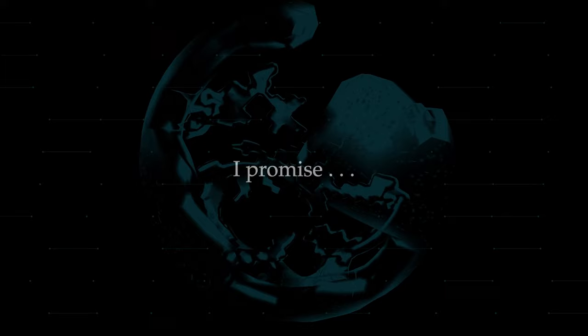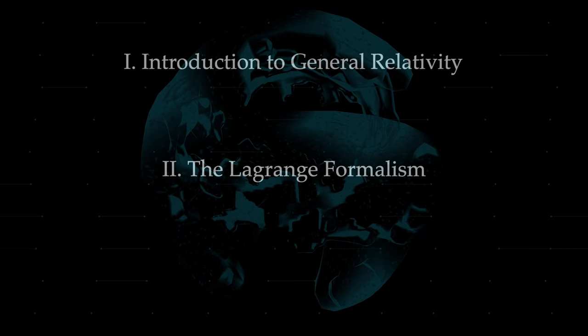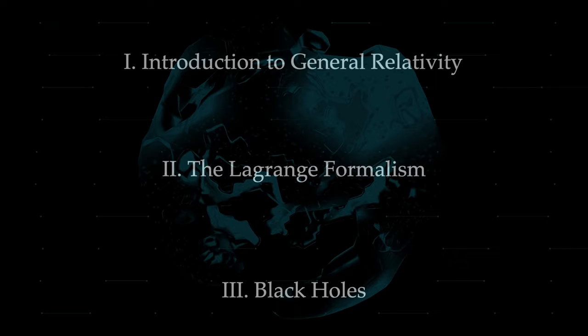The video will be structured in three sections. First, we will work a bit through the theory of relativity. Then, we will learn about the Lagrange formalism, the most powerful way of doing physics. And the third step will be to apply the Lagrange formalism to a black hole, finding out why a spaceship radially falling towards the event horizon will slow down.